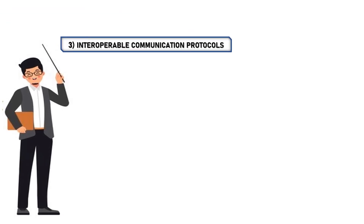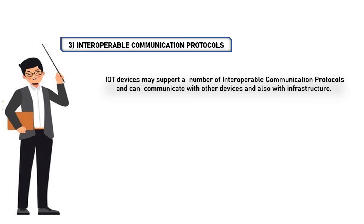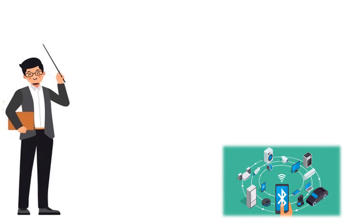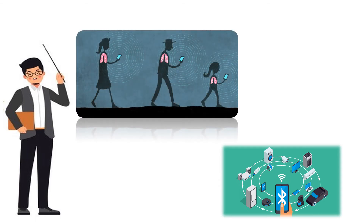3. Interoperable communication protocols. IoT devices may support a number of interoperable communication protocols and can communicate with other devices and also with the infrastructure. For example, consider person A and person B. Person A wants to share data with person B, so person A uses Bluetooth and starts sharing data with person B. By this example we can state it is an interoperable communication.